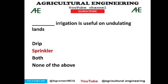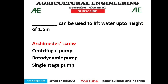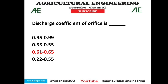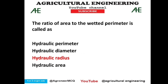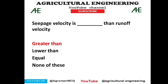The Archimedes screw can be used to lift water up to a height of 1.5 meters — the correct option. The discharge coefficient of an orifice is 0.61 to 0.65 — option C is correct. Bernoulli's theorem is an equation of conservation of energy. The ratio of area to wetted perimeter is called hydraulic radius — option C is correct. Seepage velocity is greater than runoff velocity — option 1 is correct.